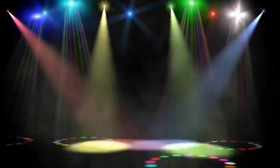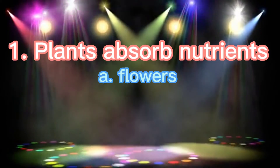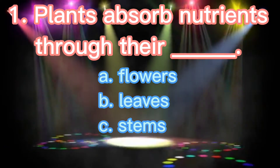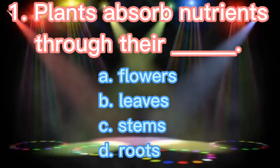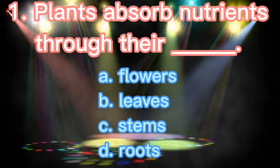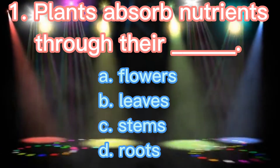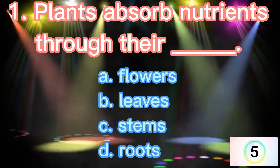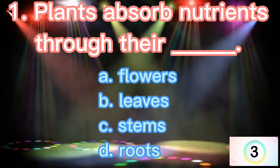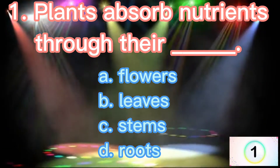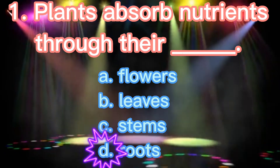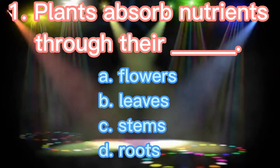Number 1. Plants absorb nutrients through their blank. Letter A: Flowers. Letter B: Leaves. Letter C: Stems. Letter D: Roots. Very good! The correct answer is Letter D: Roots.